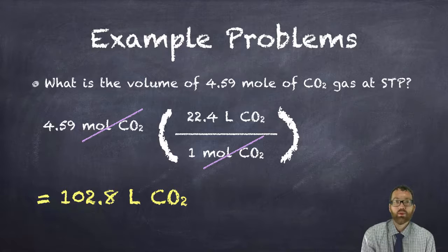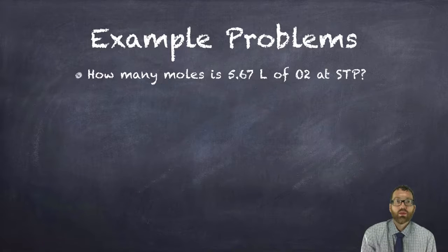So that's going from moles to liters. You just multiply by the molar volume. You also need to be able to go from liters to moles. So how many moles is 5.67 liters of oxygen gas, O2, at STP?